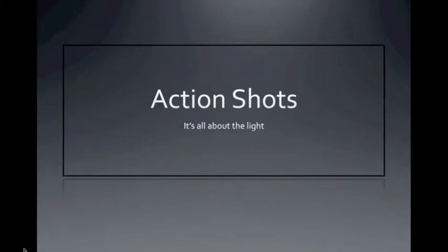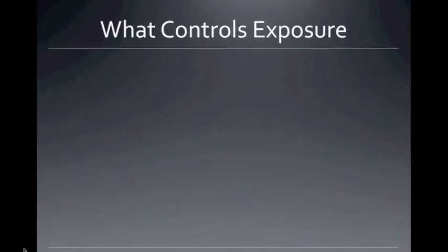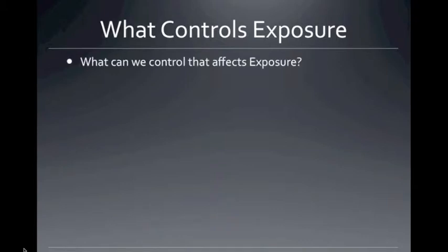Action shots using the shutter. As a summary, what controls exposure? We can control the light, so either put the subject out in the sun, turn off or on lights, add or remove use of the flash. There are various ways we can control the amount of light for exposure.